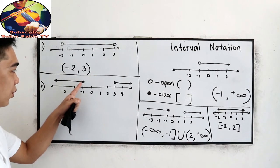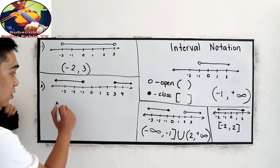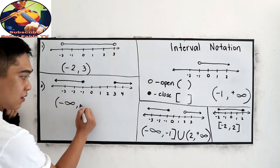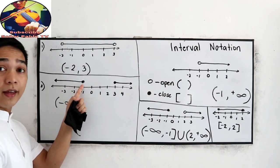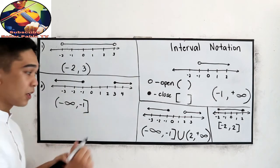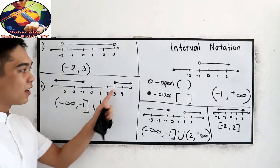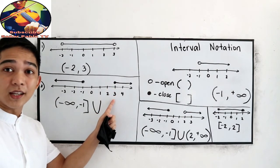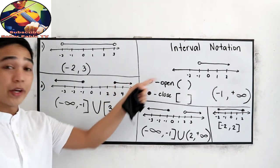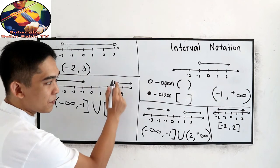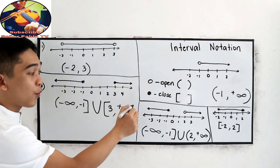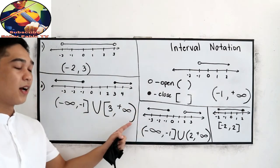We are going to negative infinity, so open to negative infinity. Negative 1 is shaded, so that means negative 1 is included — we close bracket to negative 1. Union. Close bracket to positive 3, then we are going to positive infinity, so we use open parenthesis for positive infinity.